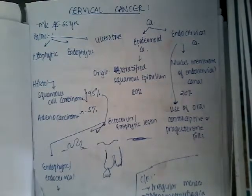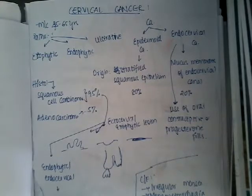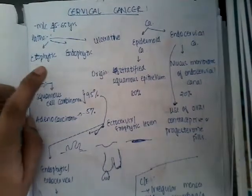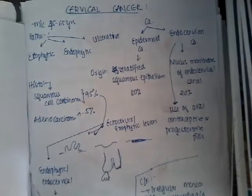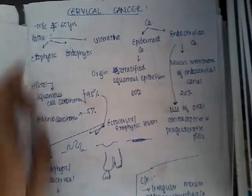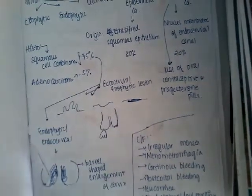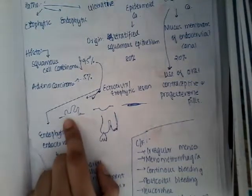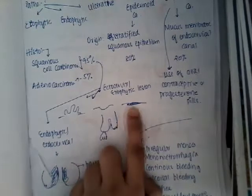Squamous cell carcinoma is mostly epidermal carcinoma. Squamous cell carcinoma can again be divided into two types: ectocervical carcinoma, also called exophytic lesion, or endocervical carcinoma, also called endophytic lesion. The ectocervical or exophytic lesion is of three types: polypoid type, ulcerative type, and flat-indurated infiltrative lesion.